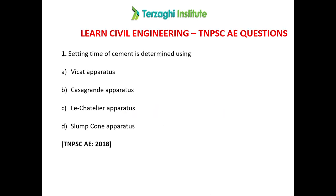First question: Setting Time of Cement is Determined Using which apparatus? There are four options: A) Vicat Apparatus, B) Casagrande Apparatus, C) Lechatelier Apparatus, and D) Slump Cone Apparatus.